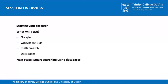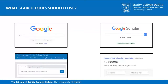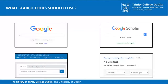Starting your research, we'll be looking at different search engines to use to find journal articles, and then we'll be looking at smart searching using databases. So what search tools should you use? We'll be looking at Google and Google Scholar, then the library search engine, the Stella search, and our databases. That's a screenshot of our databases page there on one of the library web pages.